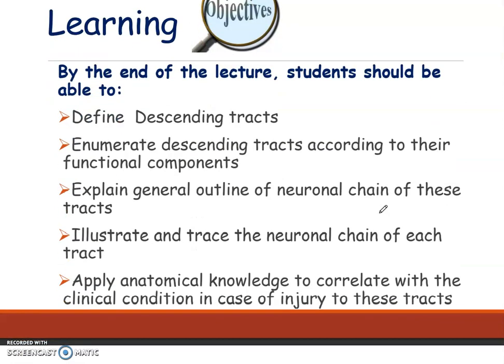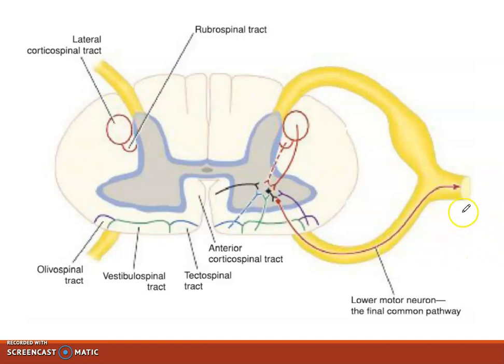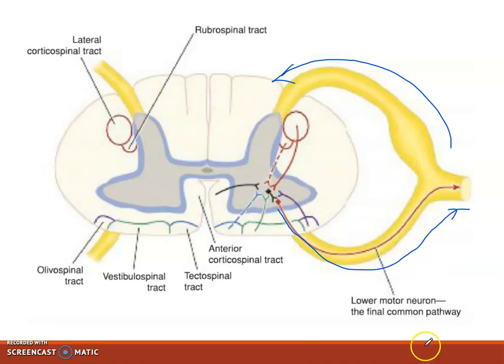These are the learning objectives for today. Descending tracks are motor tracts and they are taking signals from the brain to the parts of the body. For example, they might be taking signals from the brain to the hands so that the muscles can be moved. The dorsal tracts were sensory, which were ascending tracks, and the anterior ones are motor, which are the descending tracks.